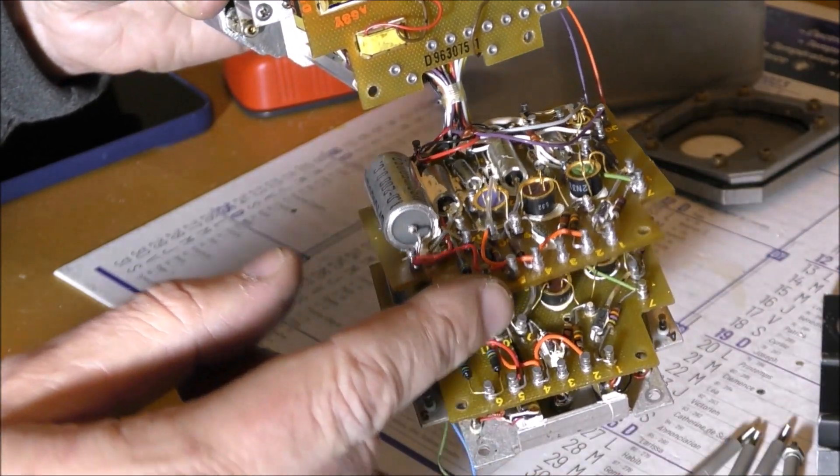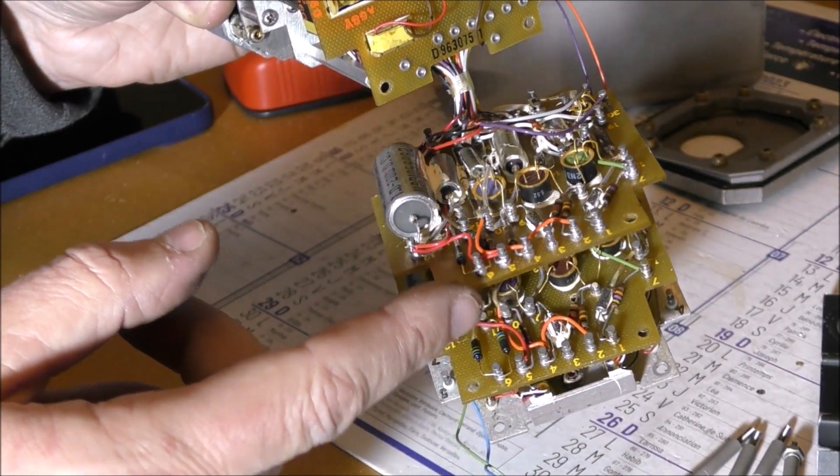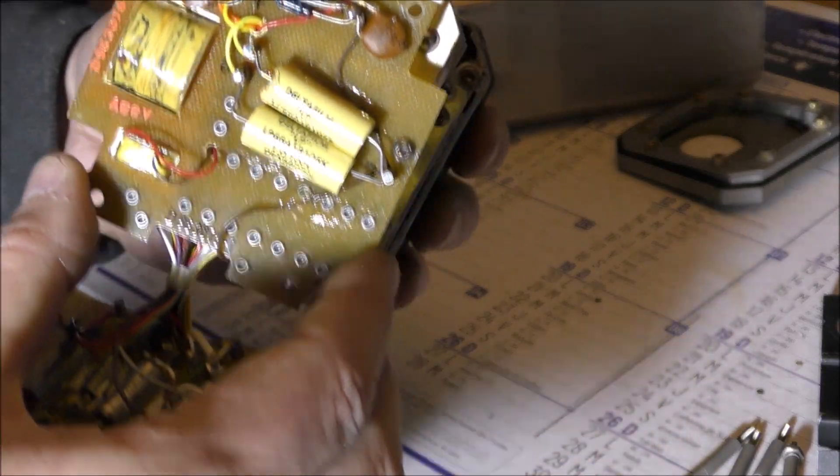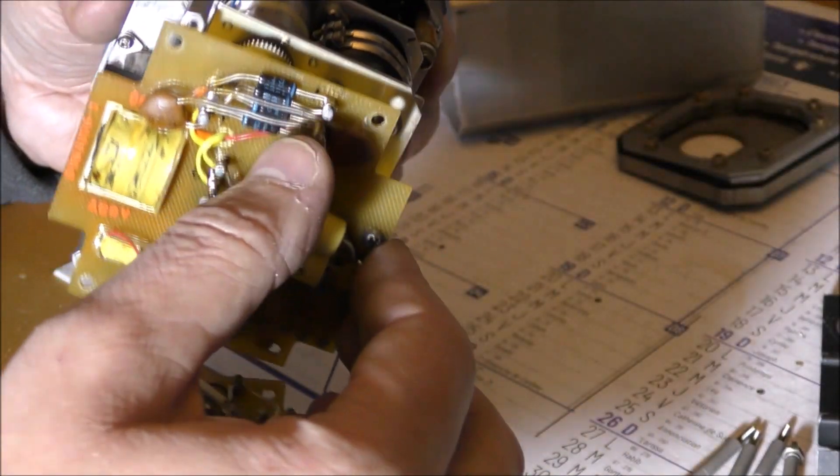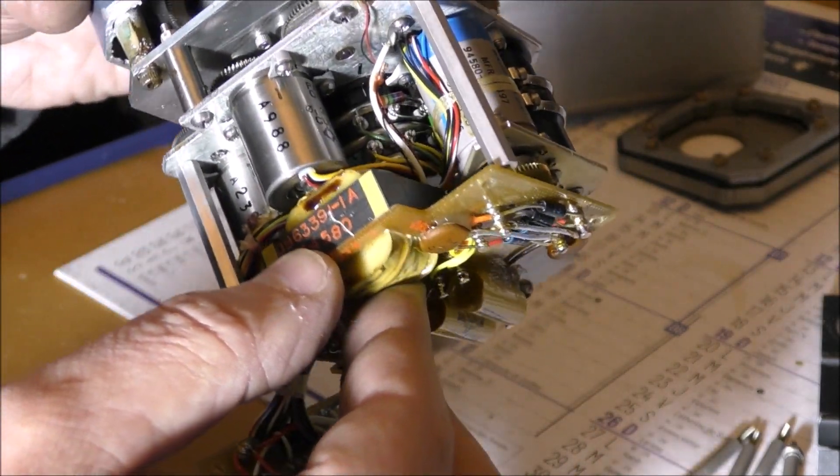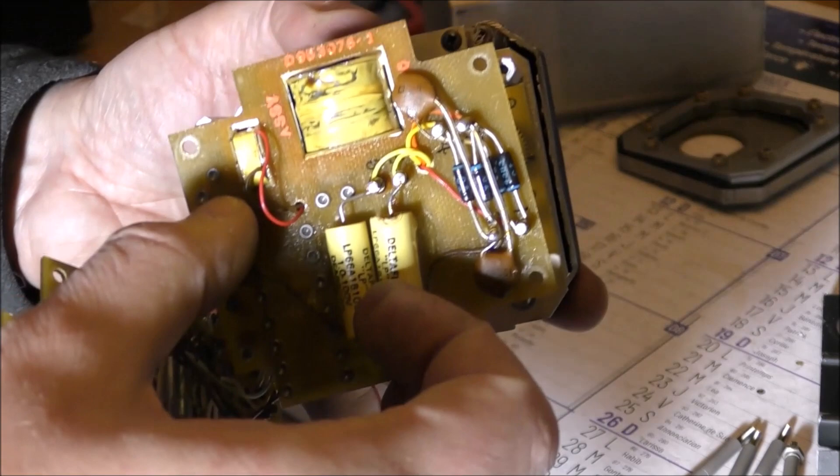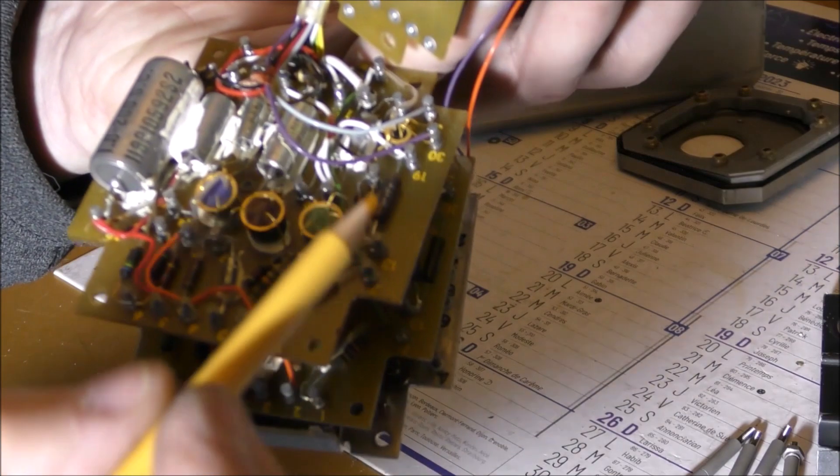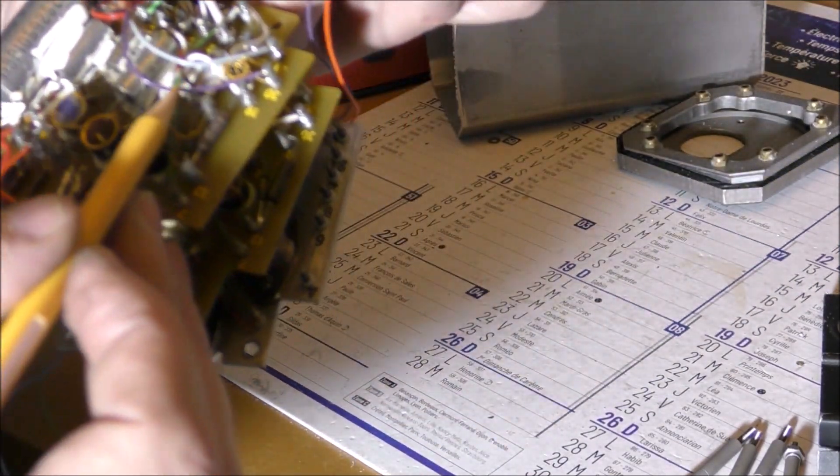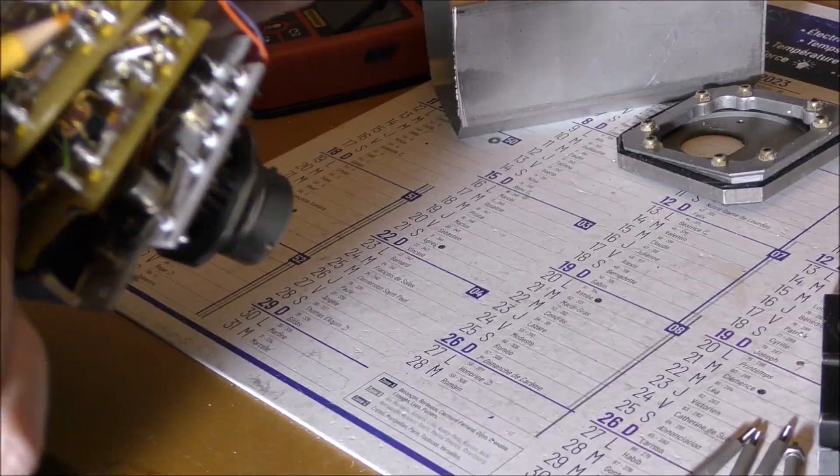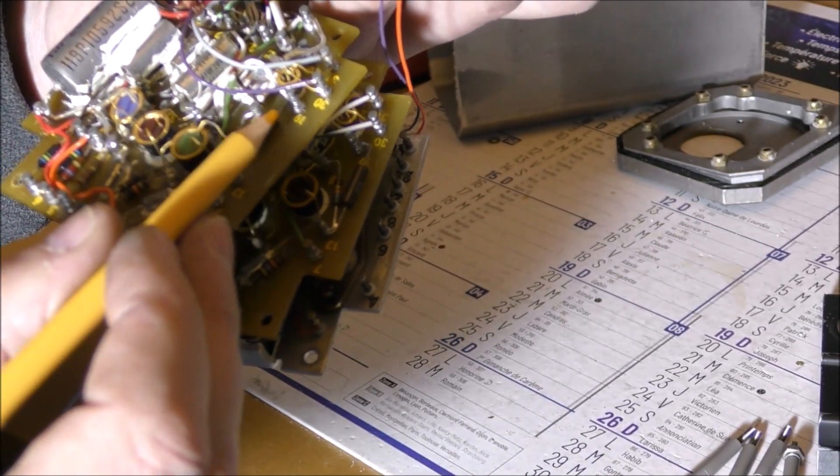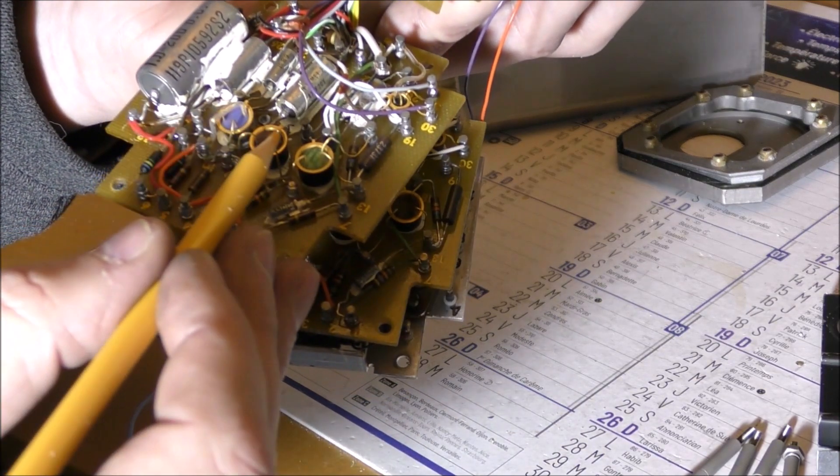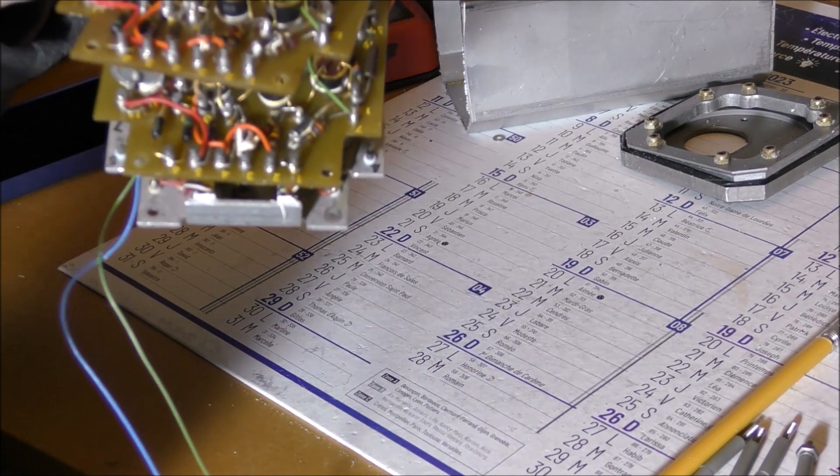So we can see here two servo amplifiers, they are identical normally. This is a power supply board, you can see a bridge rectifier, the power supply transformer. This is an inductor. So we can see here there is a transistor with four pins, this is probably a JFET. This amplifier uses four transistors, one this JFET and three bipolar transistors.